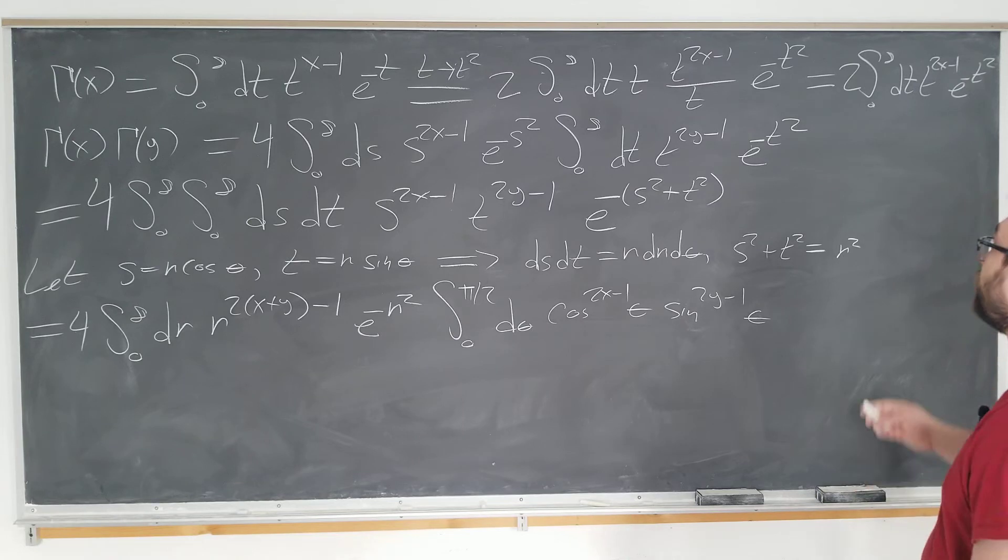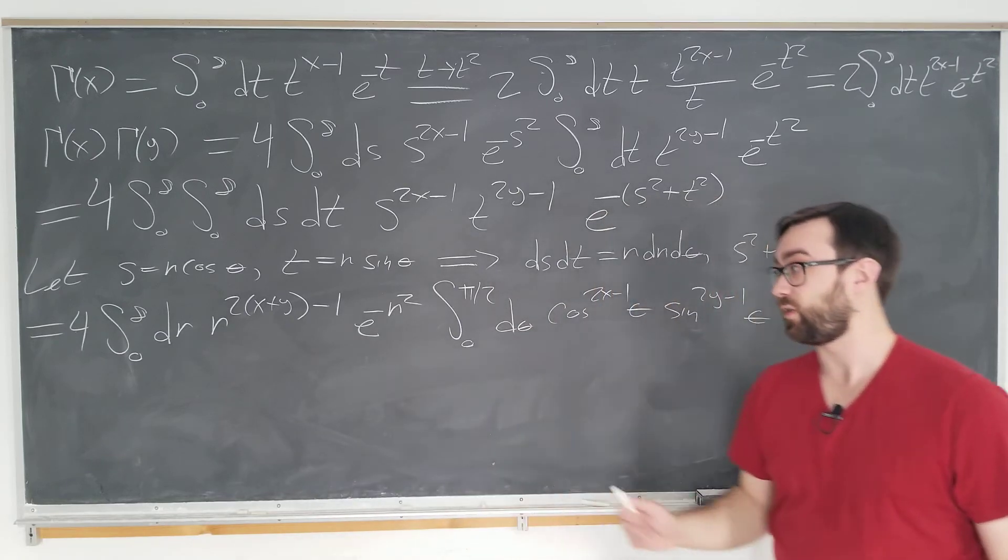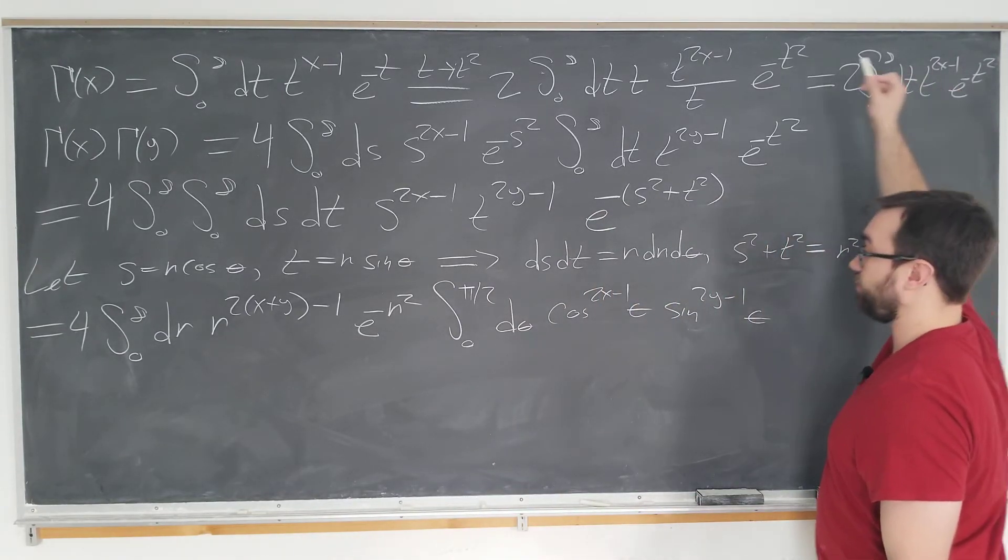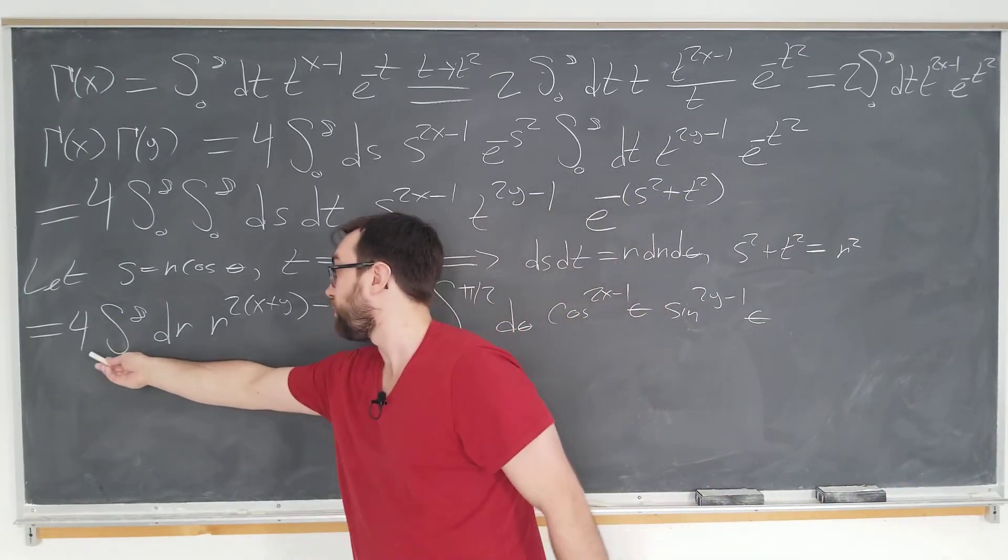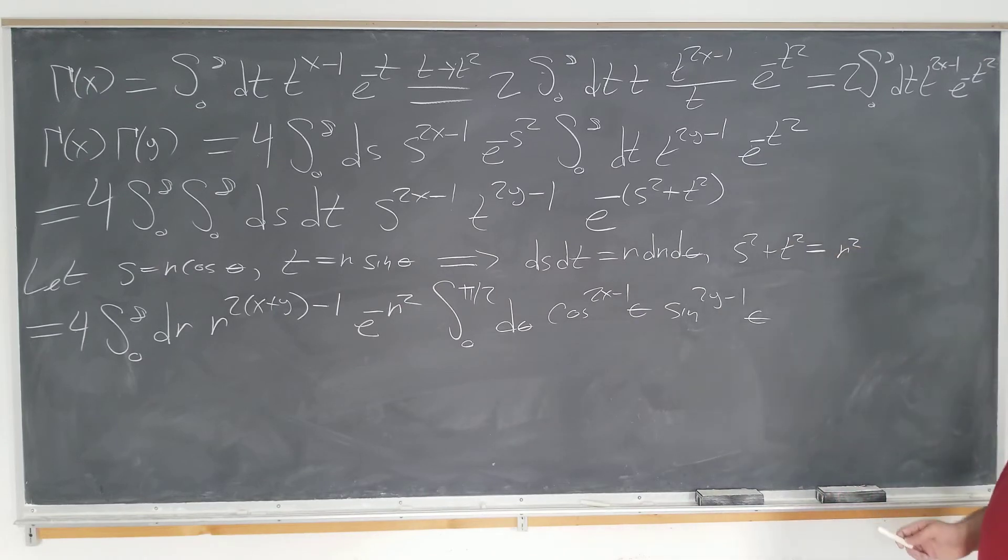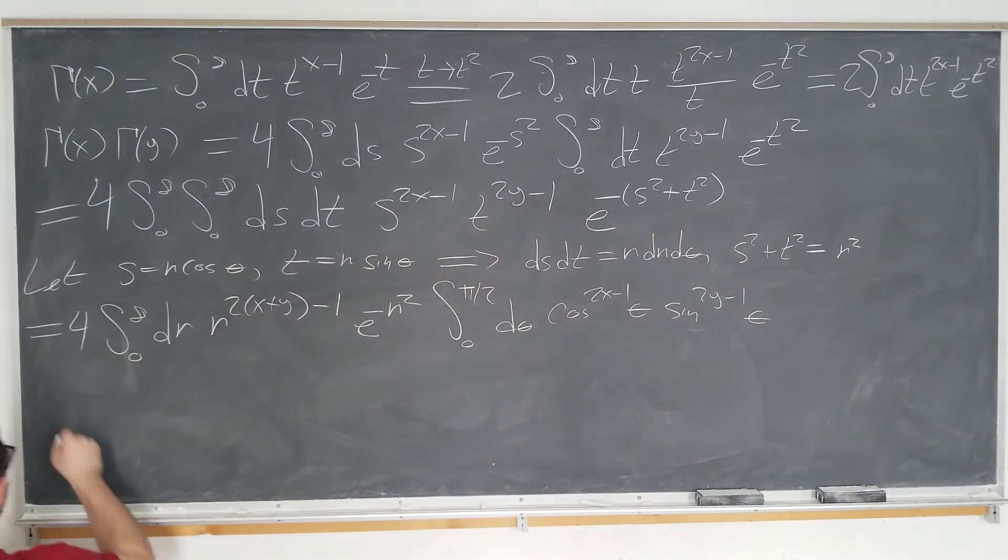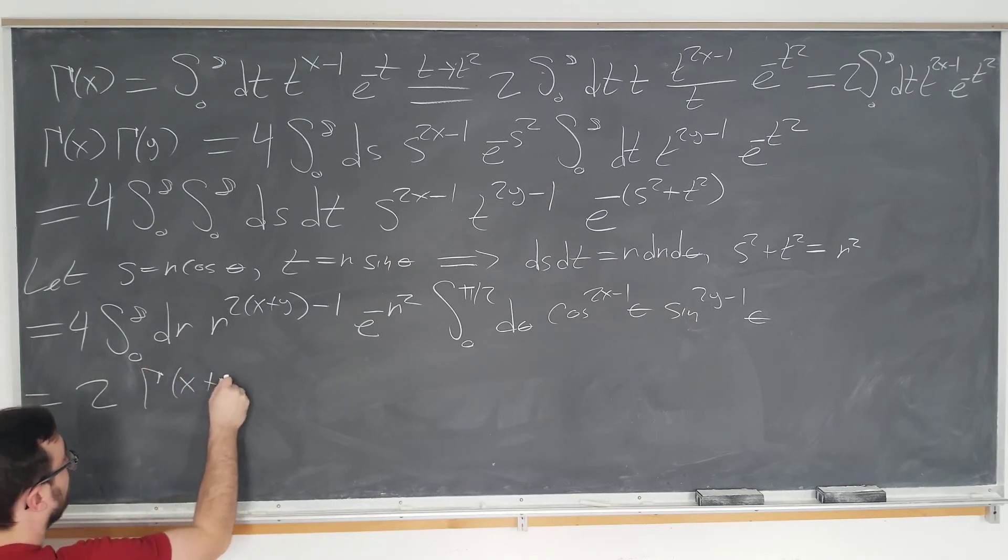Why are we done? Well, if we look above here, we see that our r integral is exactly the form of a gamma function. Which gamma function is it? Well, we have x here. I'm going to replace that with x plus y. We're all set. There's a factor of four here, which actually means it's going to be two times the gamma function, since the gamma function already has a factor of two in it.